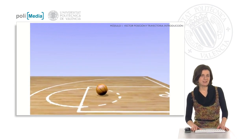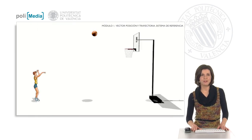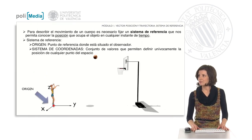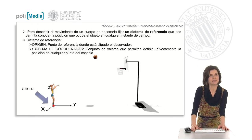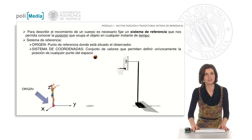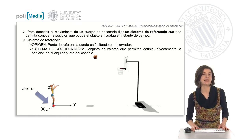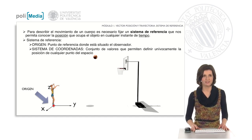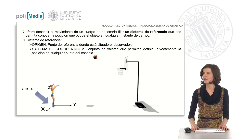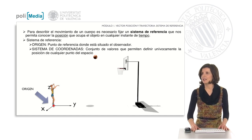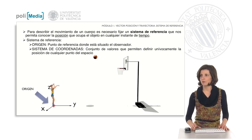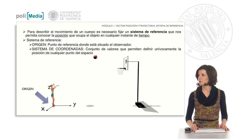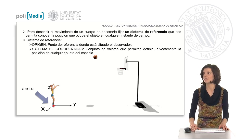In this case, we are going to study the movement of the ball. The first thing we need is a reference system that allows us to know the position occupied by the object at any time. That is to say, the reference system will give us the spatial-temporal information of the object under study. The reference system consists of an origin, which is a point where the observer is located, and a coordinate system,